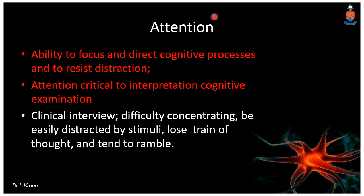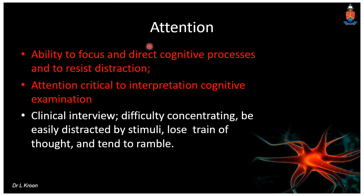The next modality to assess is attention — the ability to focus and direct cognitive processes and resist distraction. Examination of all cognitive processes is hierarchical: you must pass the lower-level cognitive screens before moving to higher functioning. If a person is inattentive and cannot maintain focus, you won't be able to test for aphasia, apraxia, or agnosia. Attention is the first-level process you must confirm before assessing higher cortical functioning.